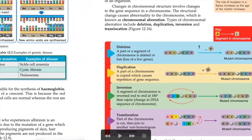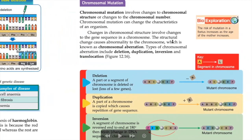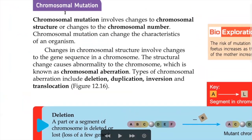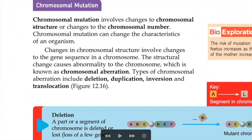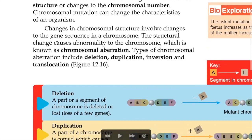That's all for gene mutation. Now we go for chromosomal mutation — this is the last one. Chromosomal mutation involves a change to the chromosome structure or a change to the chromosomal number. Chromosomal mutation will cause the chromosome to change shape (structure), and secondly, it will change the number of chromosomes. For example, humans normally have 46 chromosomes, but due to chromosomal mutation, maybe they have more or fewer.